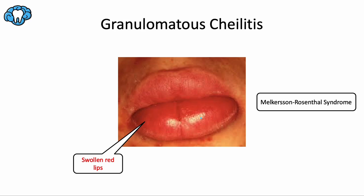One syndrome this condition may be related to is Melkersson-Rosenthal syndrome, which should sound familiar from the previous video on developmental disturbances of the tongue. The memory trick involves Mel's Bells, reminding us of Bell's palsy — a type of facial paralysis — the double S tipping us off to a fissured tongue, and rosy red swollen lips as a result of granulomatous cheilitis.